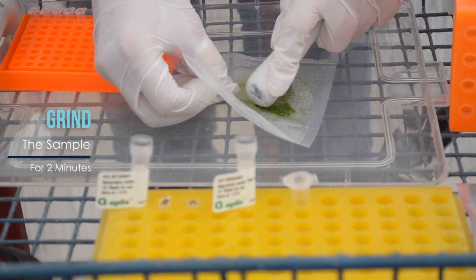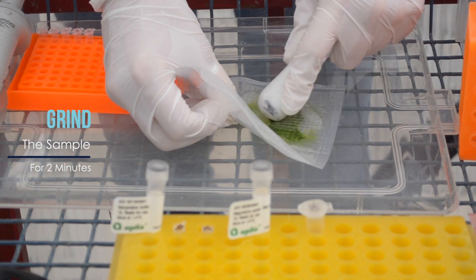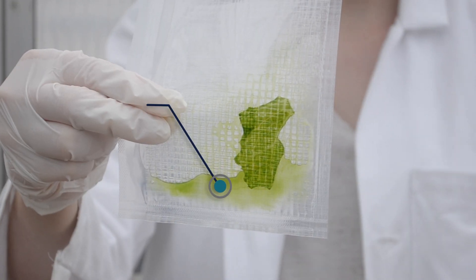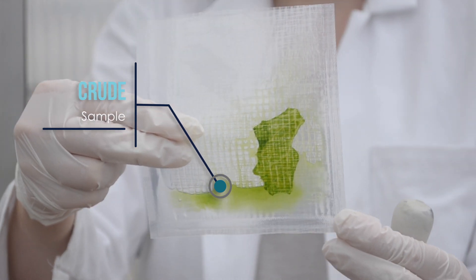If you're going to do an RPA, we take one microliter of this liquid and use it as our DNA sample. For LAMP, QPCR, or traditional PCR, we'll clean the sample up more before we use it.